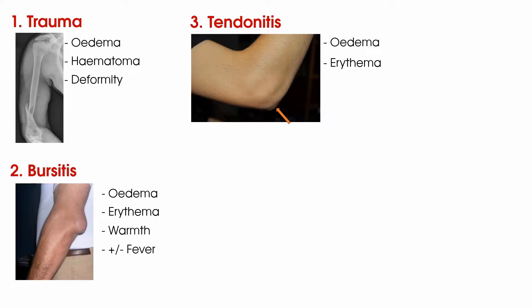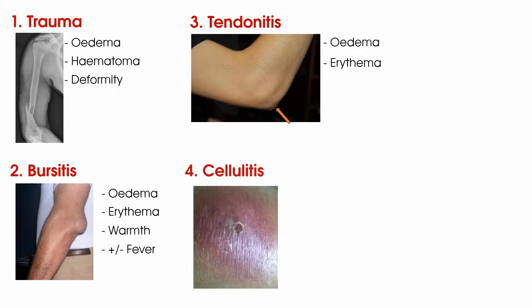Number four is an infection or cellulitis, where you may find redness or swelling, or in progressed cases even pus in the area of infection. Furthermore, look at your patient as a whole — do they feel unwell or do they have a temperature?